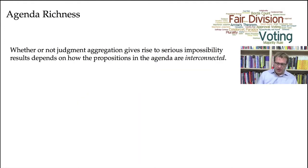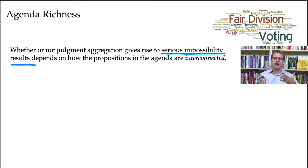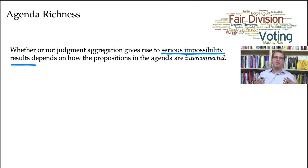It's important to note that whether or not judgment aggregation gives rise to serious impossibility results is actually going to depend on how the propositions in the agenda are interconnected. For instance, if the agenda doesn't contain negation pairs, then it's impossible to find an impossibility result — but that would be a trivial case where you're essentially not allowing the voters to reject any propositions or judge any propositions to be false.